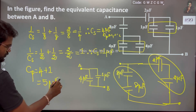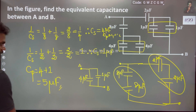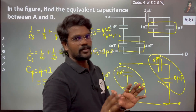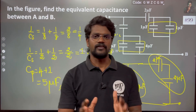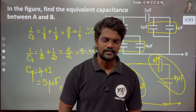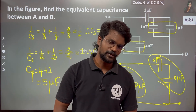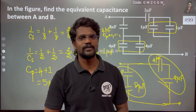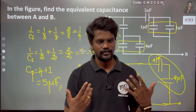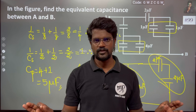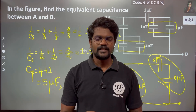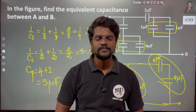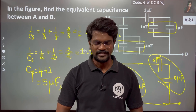For the parallel combination: Cp equals 4 plus 1, which equals 5 microfarad. So the effective capacitance for this circuit is 5 microfarad. For conceptual understanding, we have already posted many conceptual videos — please refer to those. Thank you, and help others with a smile.